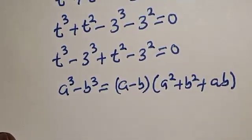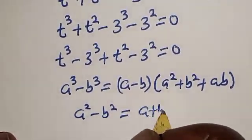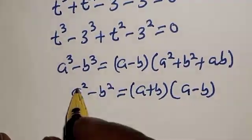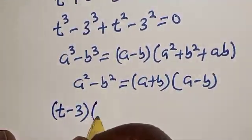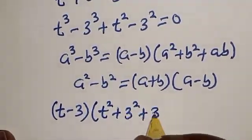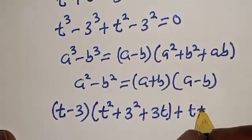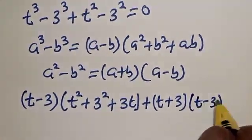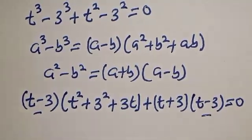Also, if you have a squared minus b squared, this is equal to a plus b multiplied by a minus b. Now let's compare and substitute. We have t minus 3 here and t minus 3 here. Let's bring it out.